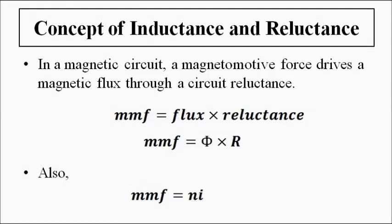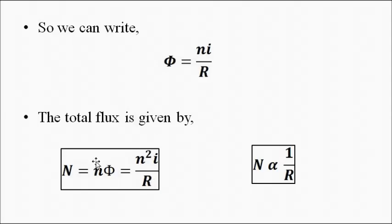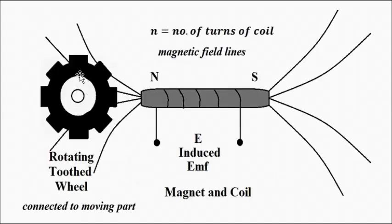We can write that the flux φ = Ni/R, and the total flux associated with the entire coil is Nφ, which equals N²i/R. So the total flux is inversely proportional to the circuit reluctance, and inductance is the total flux divided by the individual current, equal to N²/R. This relationship between total flux and reluctance is used in the variable reluctance tachogenerator.